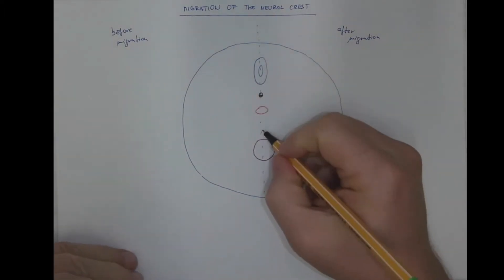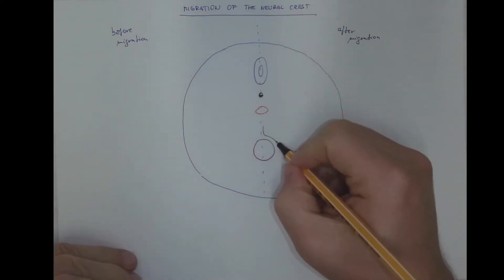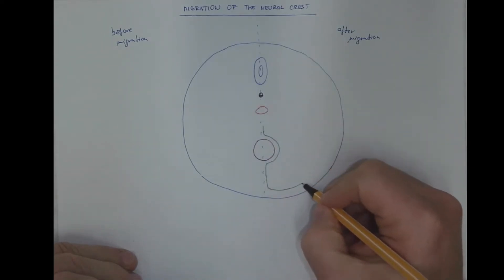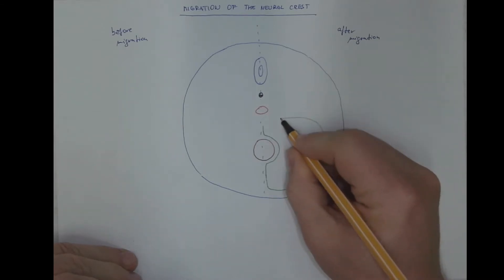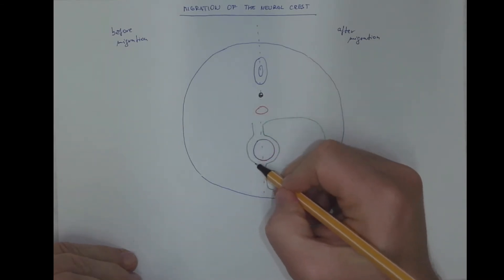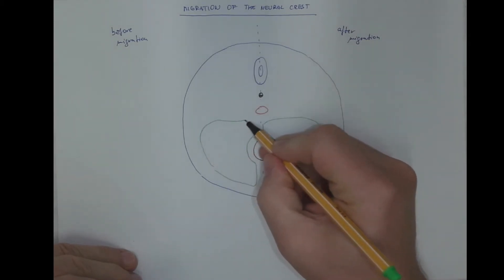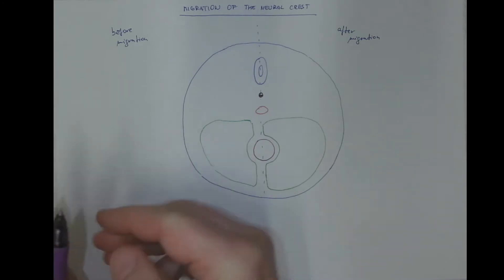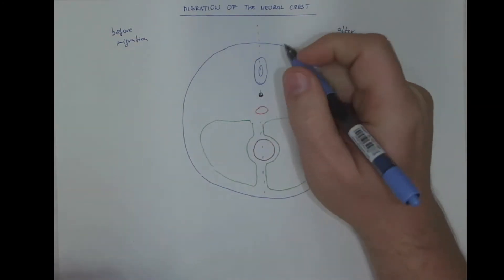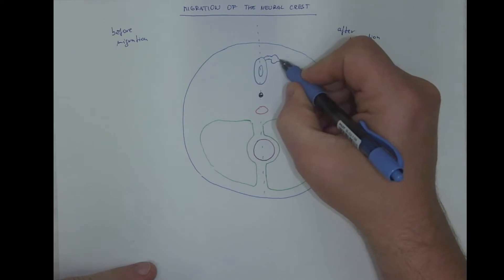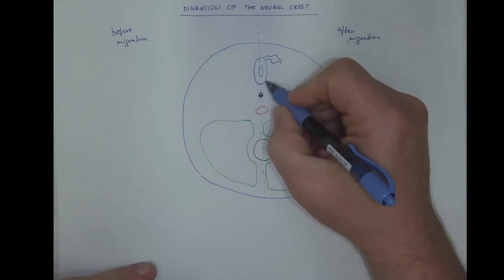And there will be the mesenteries, the ventral and dorsal mesenteries, the celom cavity. And here I will also need the dorsal roots of spinal nerves, the sensory dorsal ganglia, the spinal ganglia.